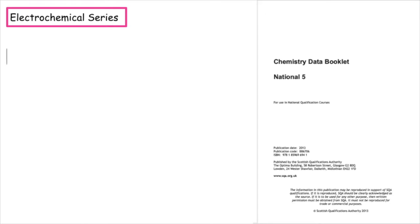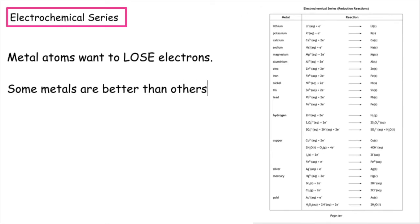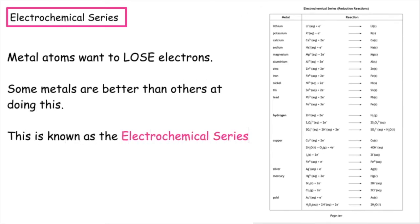Metal atoms want to lose electrons to achieve stability. Some metals are better at doing this than others. The order in which we have the metals — those easily losing electrons at the top and those that find it more challenging at the bottom — is known as the electrochemical series.